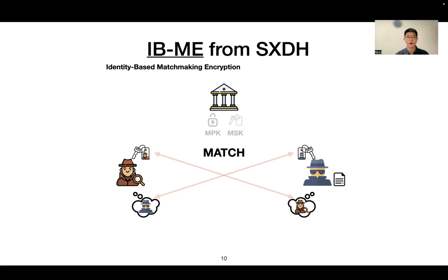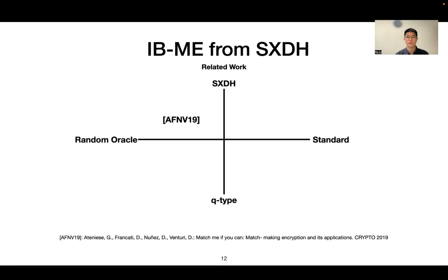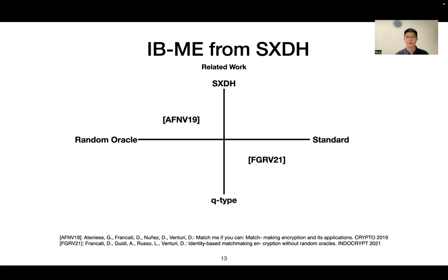The concept of IBME was proposed by Ateniese et al. in Crypto 2019, and they gave the first work under the BDH assumption but in the random oracle model. Then Francati et al. proposed the first construction in the plain model but under a Q-type assumption. So it remains an open problem: can we build an IBME scheme under the standard assumptions in the standard model?